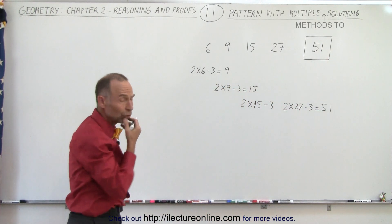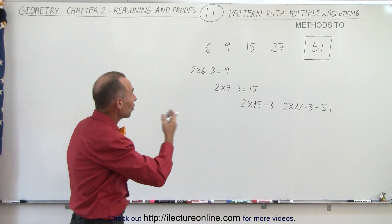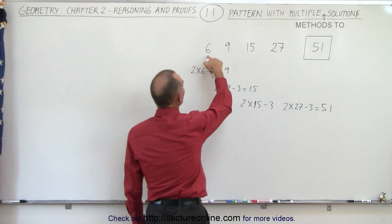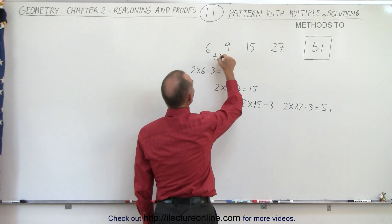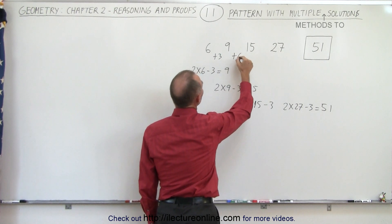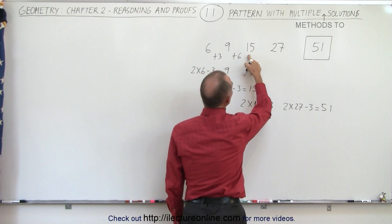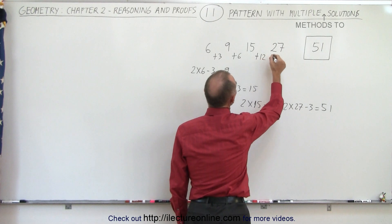But then you can say, let's use a traditional way. How much does each number increase each time? Well, 6 plus 3 gives me 9. 9 plus 6 gives me 15. 15 plus 12 gives me 27.